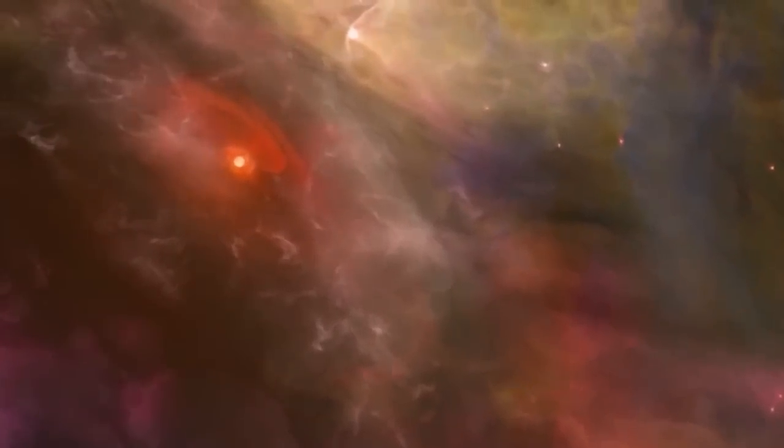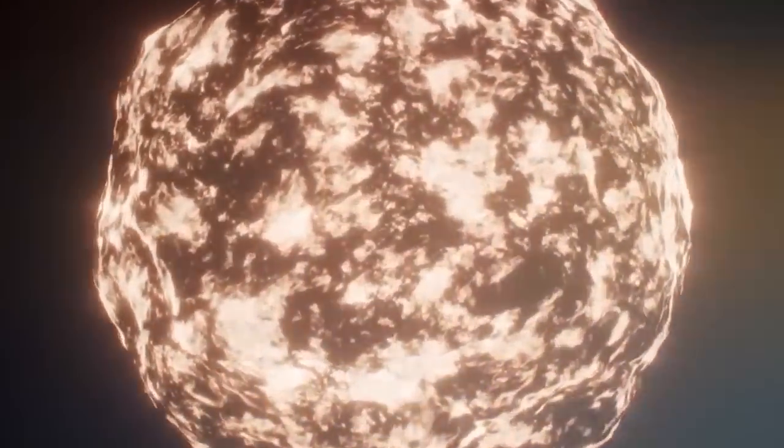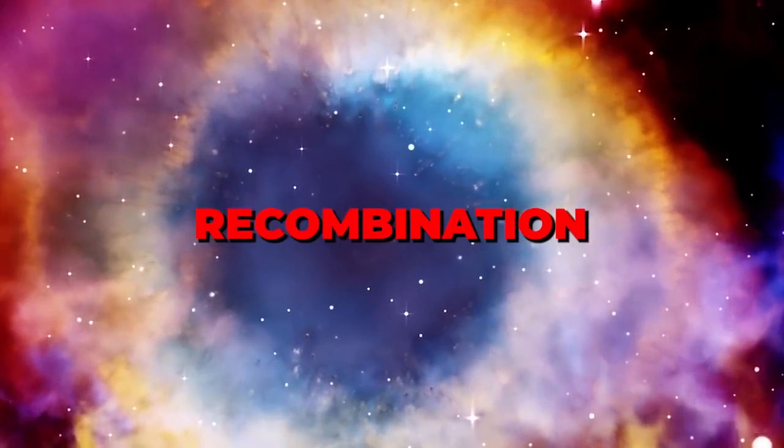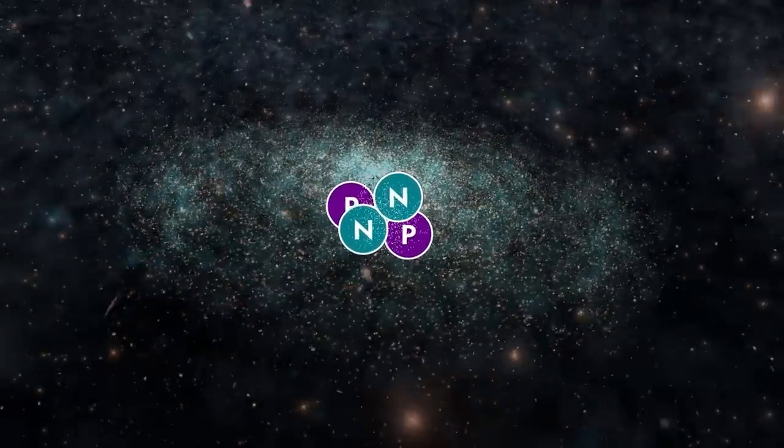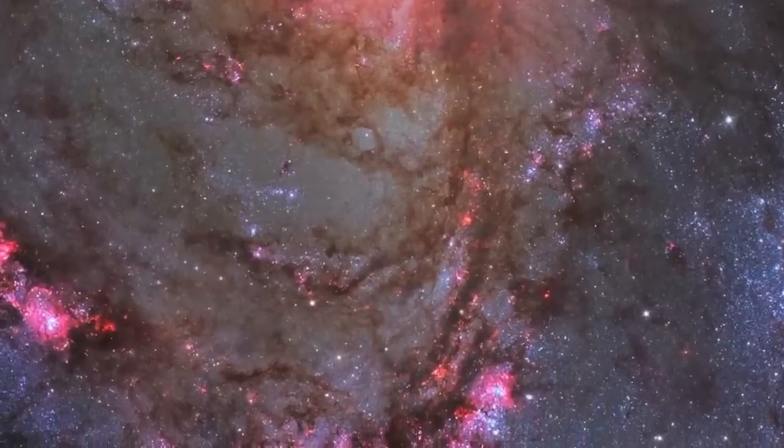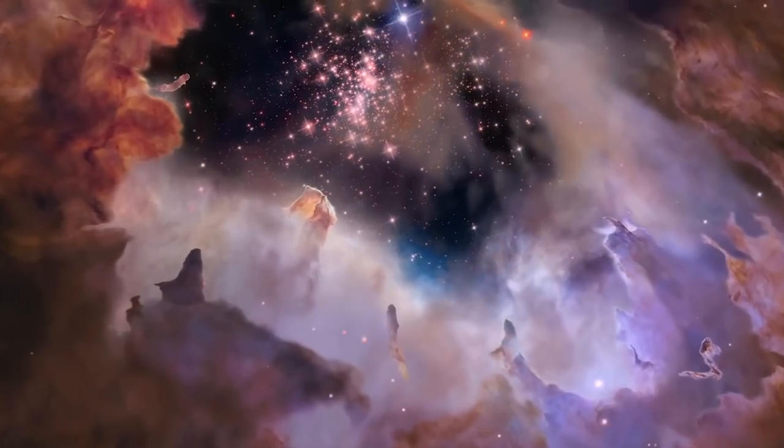But the story doesn't end here. As the universe expanded, it cooled down, and matter began to form. There was a magical period known as recombination, when electrons combined with nuclei to form the first atoms. This made the universe transparent for the first time, allowing light to travel across space.